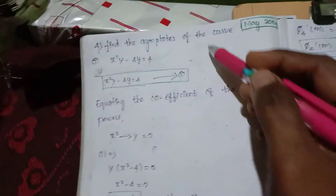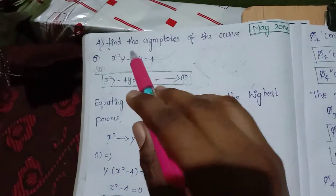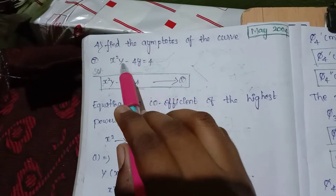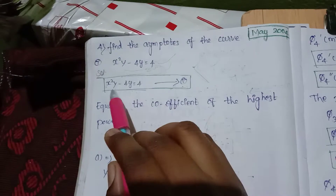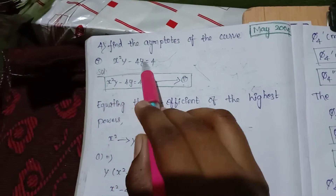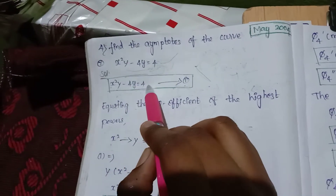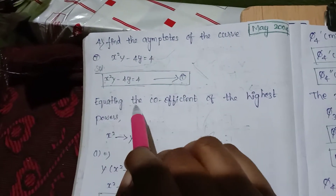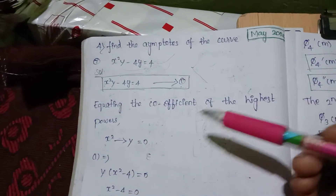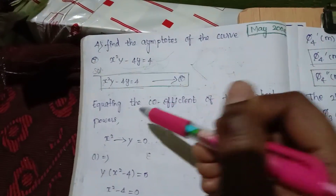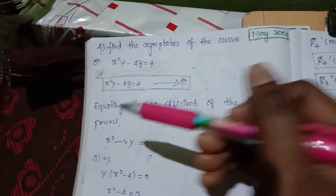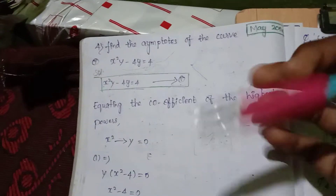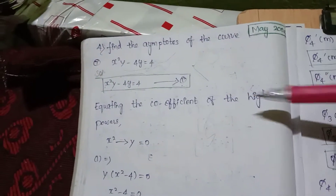x²y - 4y is equal to 4. Equating the coefficient of the highest powers. The highest power is equal to 5.